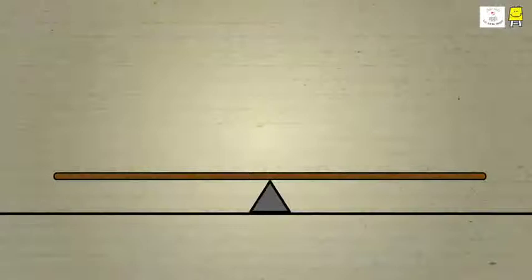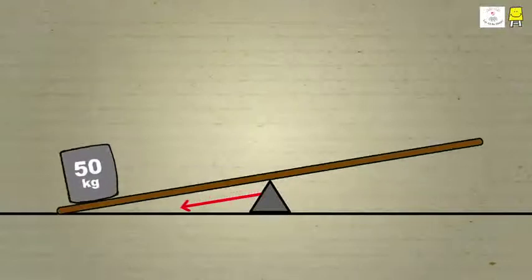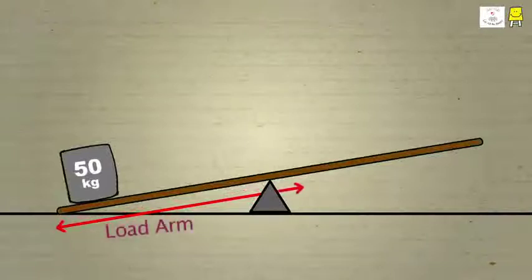On one side of the lever, we keep a weight of 50 kilograms. The lever goes down. We call the distance between the load and the fulcrum the load arm.